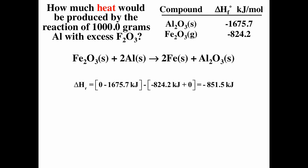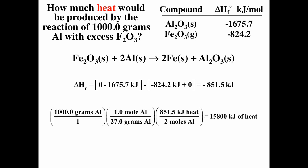To find how much heat is produced by reacting 1,000 grams of aluminum with excess iron oxide, we use the delta H already calculated. We convert 1,000 grams to moles by dividing by 27 grams per mole, multiply by delta H, and divide by two because the reaction uses two moles of aluminum. The result is 15,800 kilojoules of heat produced.